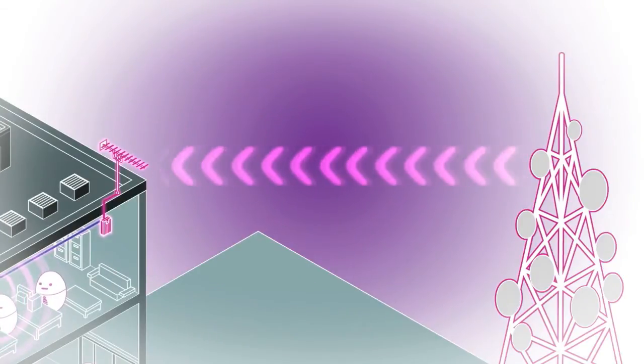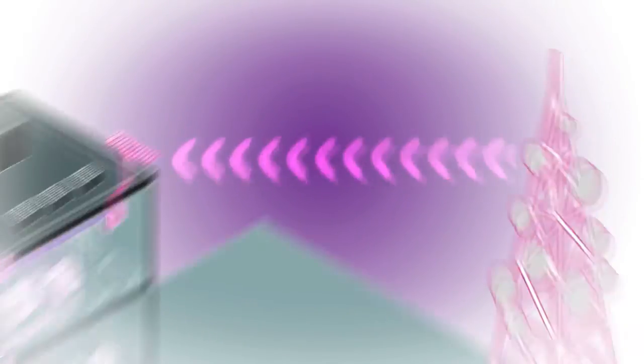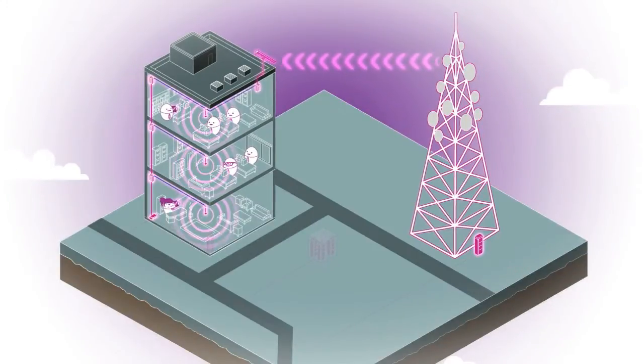Having received the radio signals, the DAS filters, amplifies, and redistributes them throughout the building, ensuring maximum coverage for mobile network operators and their customers.